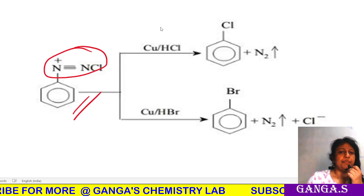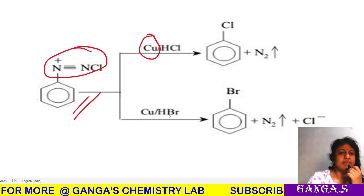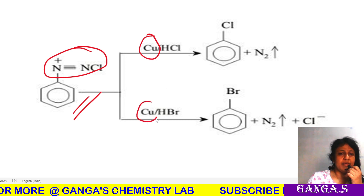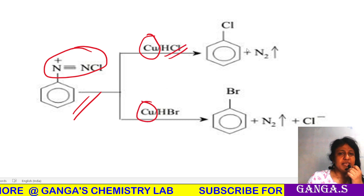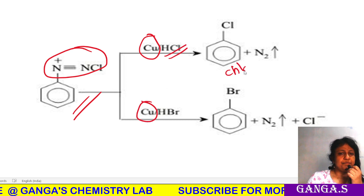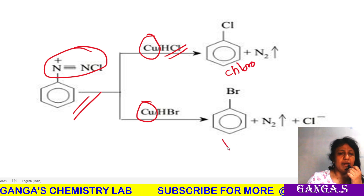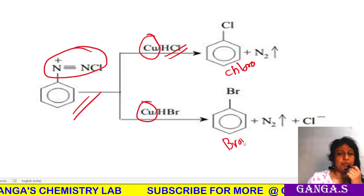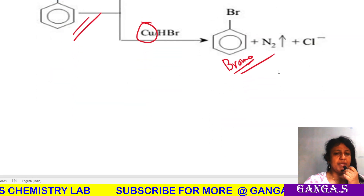In Gatterman reaction, CuCl is not used — instead copper powder is used. With HCl we get chlorobenzene, and with HBr we get bromobenzene. That is the Gatterman reaction.